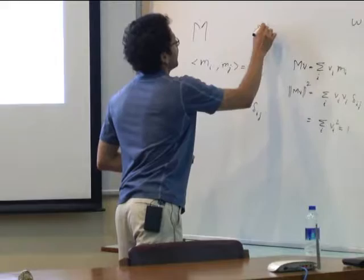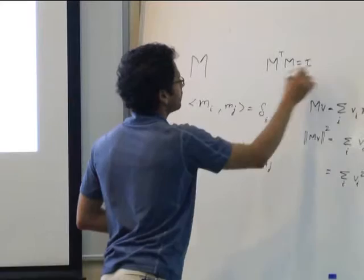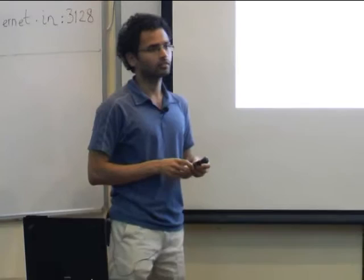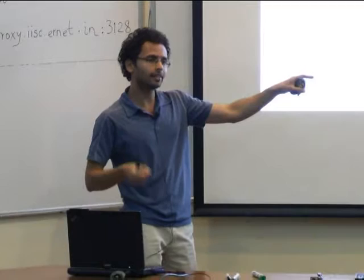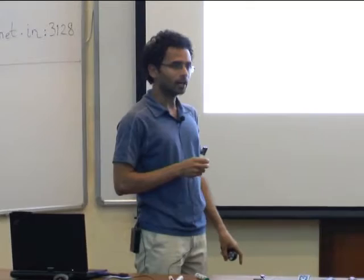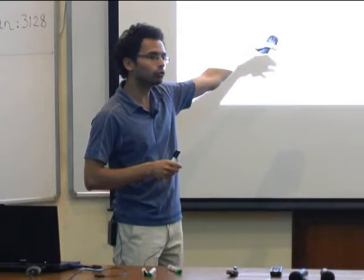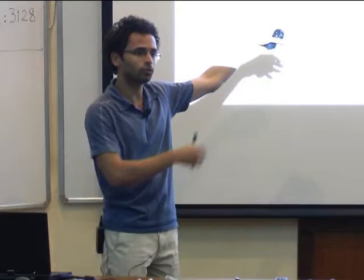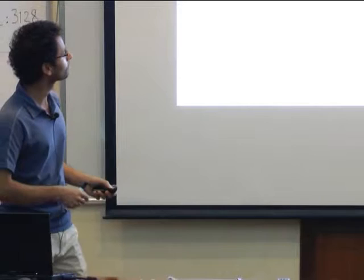Orthonormal columns tell us directly that M-transpose M equals the identity. What we have shown here is that whenever M is square, M-transpose M = I implies M M-transpose = I as well. The proof goes via SVD and makes the reason very clear.